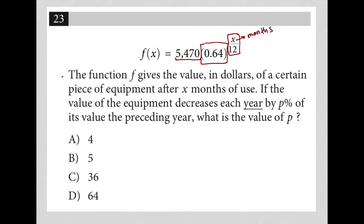What is this 0.64? Well, 0.64 is the decimal form of 64%. So this is telling me that every year — when I have 12 months here, that becomes one year; when this gets out to 24 months, that becomes two years, and so on.